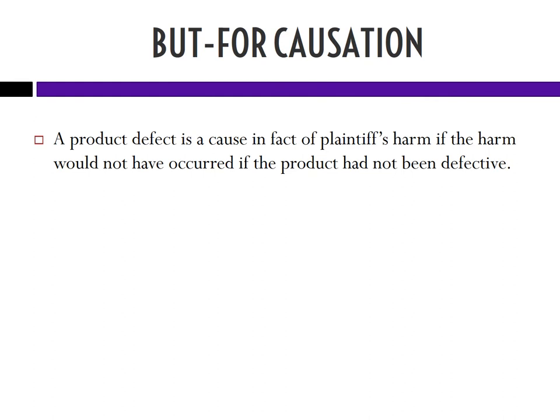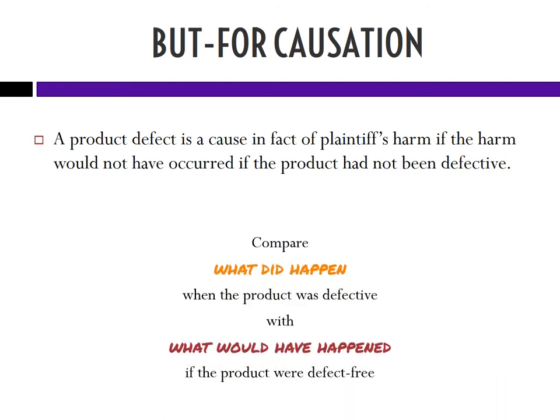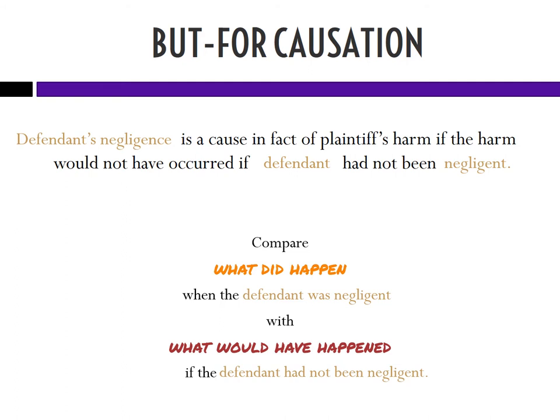Last semester we talked about but-for causation and had this great rule that a product defect is a cause in fact of plaintiff's harm if the harm would not have occurred if the product had not been defective. Now that we're in the land of negligence, not much is going to change. We're going to say defendant's negligence is a cause in fact of plaintiff's harm if the harm would not have occurred if the defendant had not been negligent. We're comparing what did happen when the defendant was negligent with what would have happened if the defendant had not been negligent.